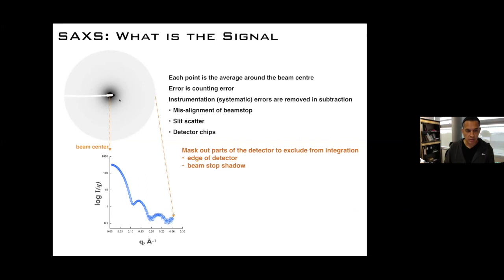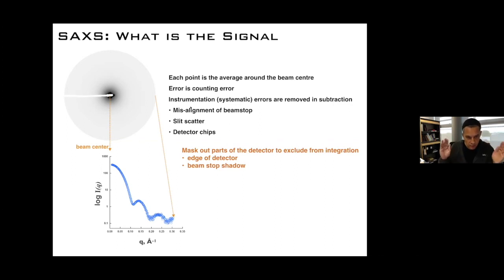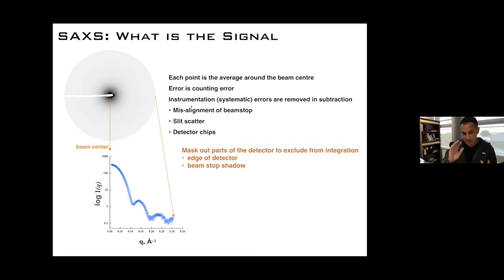The errors are typically errors in counting. As you go around in the circle you have counts on the pixels, so you're doing Poisson counting statistics. If there are any issues with the instrument itself — if the beam stop is misaligned slightly, or you scatter from the slits, or some issue with the detector — typically when you do the subtraction between the buffer and the sample, a lot of these things just subtract out.